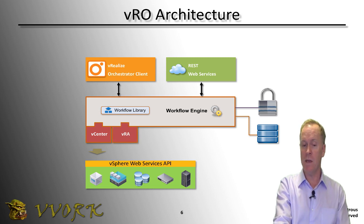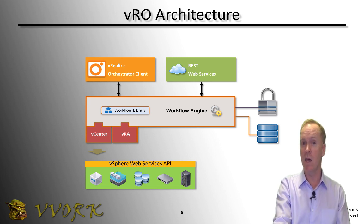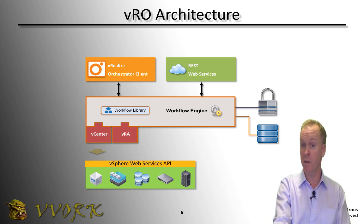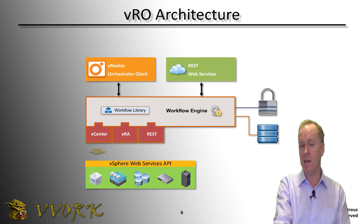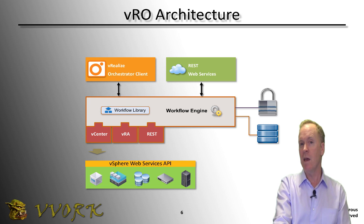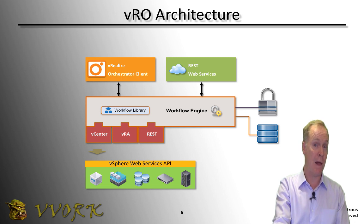Another plugin available is the VRA plugin, so you can create an Orchestrator workflow that does things like go into the VRA service catalog, pick a machine, and deploy a machine from a machine blueprint. Another plugin is the REST client plugin — in addition to Orchestrator having a REST server built in, by installing this plugin you can also turn Orchestrator into a REST client.